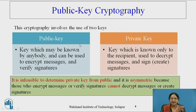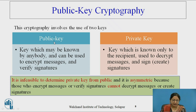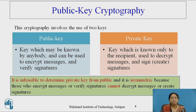Public key cryptography involves the use of two keys: public and private. The public key may be known by anybody and can be used to encrypt messages as well as to verify signatures. The private key is known only to the recipient and is used to decrypt messages and create digital signatures. It is infeasible to determine the private key from the public key. It is asymmetric because those who encrypt messages or verify signatures cannot decrypt messages or create signatures.